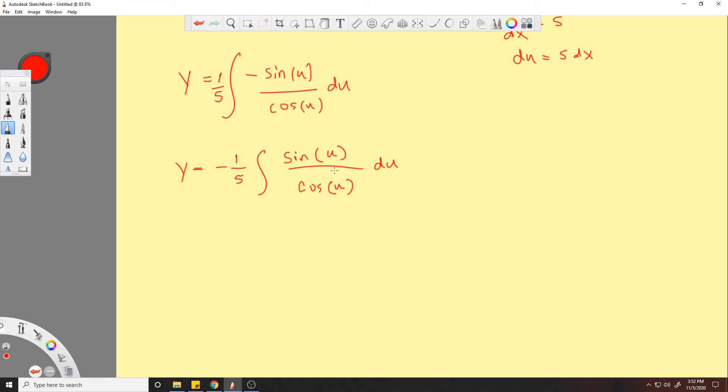So now we have a sine u over cosine u. We have a derivative of sine is cosine, I believe, right? Negative cosine. So we already have that.